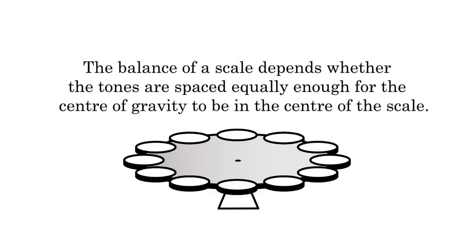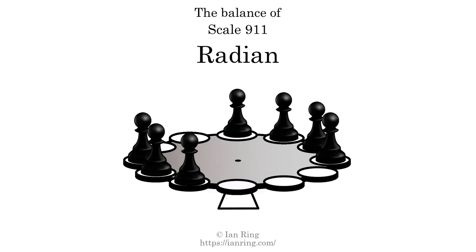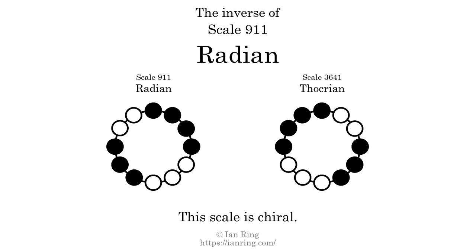The inverse of a scale is a mirror image — it is what you get when the sequence of intervals is reversed. The inverse of this scale is Scale 3641, also known as Thocrian. This scale is chiral; it cannot transform into its inverse by rotational transformation. This scale has no rotational symmetry.